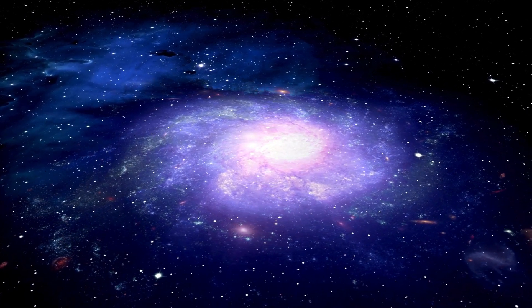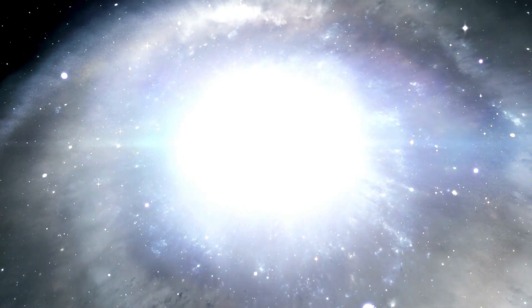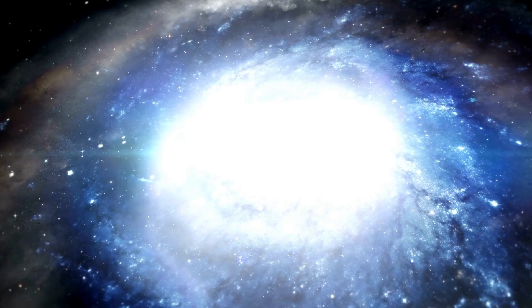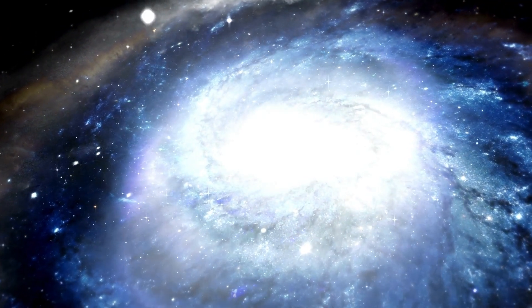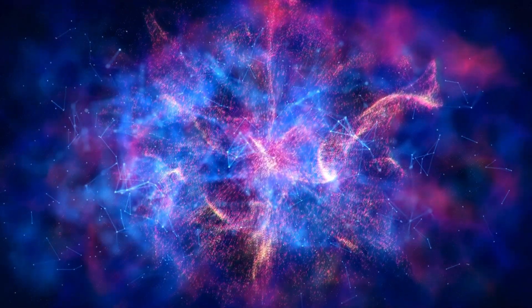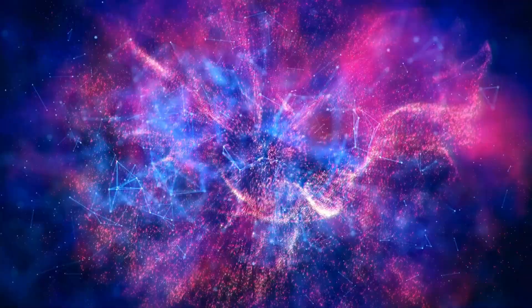Around the midpoint of the solar cycle, the Sun reaches solar maximum, a period of peak activity with the highest number of sunspots, solar flares, and coronal mass ejections (CMEs). The magnetic field becomes increasingly complex and tangled due to continuous twisting and shearing from differential rotation and convection.